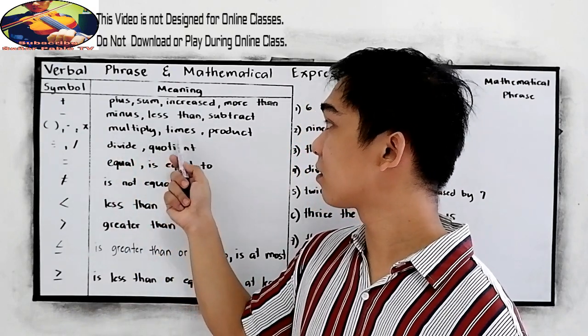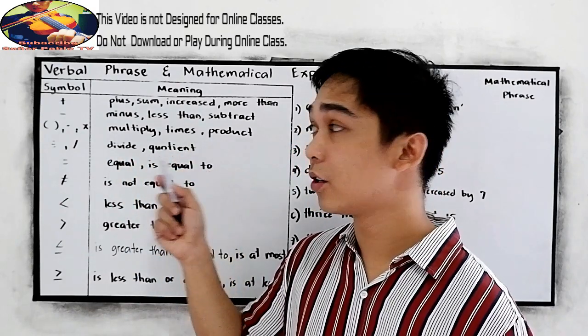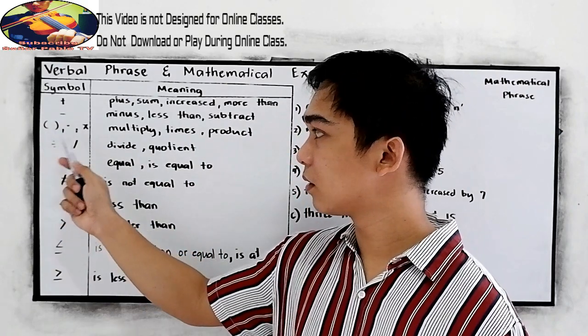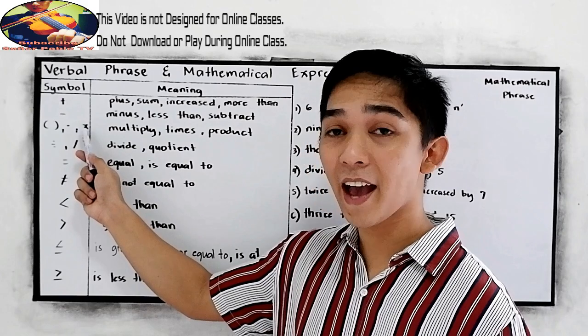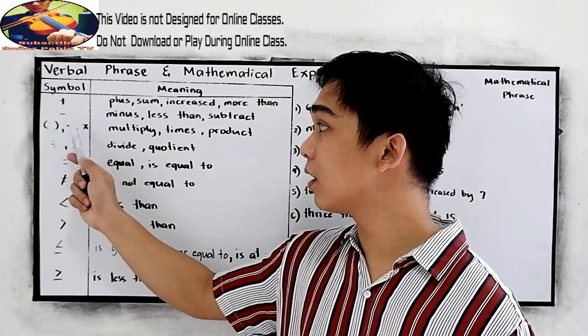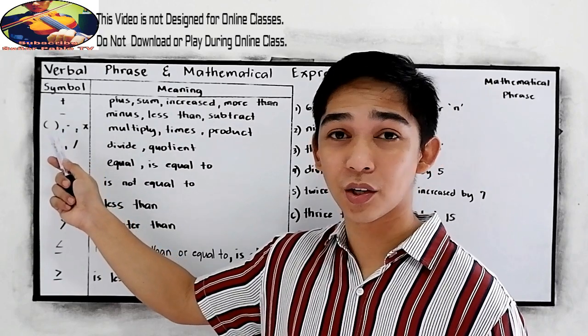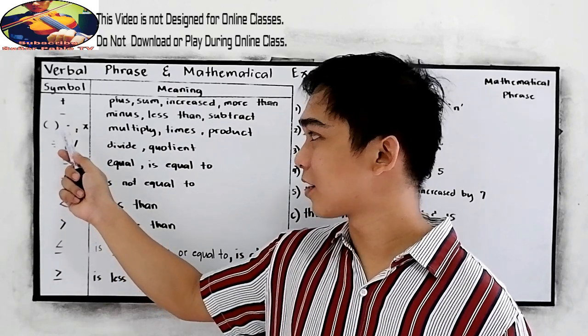And for multiply, times, or product, you are going to use parenthesis, the x, the times symbol, and that which indicates our multiplication sign.